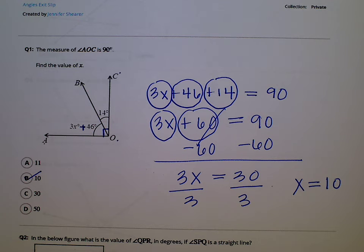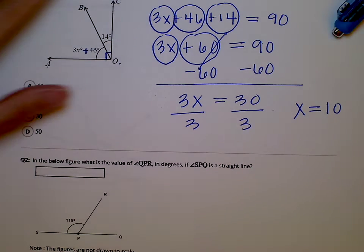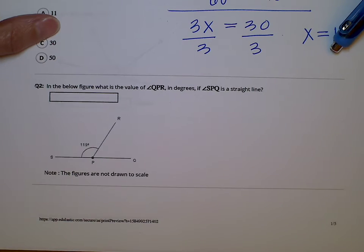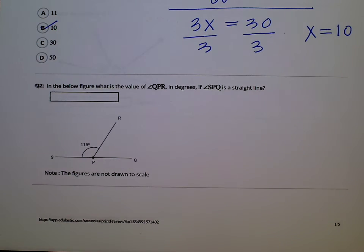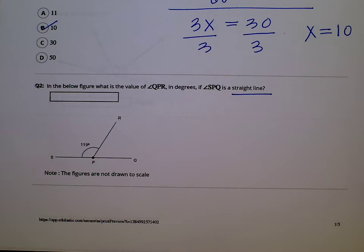Number 2 says: in the below figure, what is the value of angle QPR in degrees, if angle SPQ is a straight line? So we first of all need to understand what a straight line is. A straight line is 180 degrees every single time.